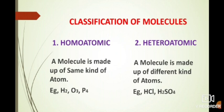In hydrogen chloride, it contains two different kinds of atoms: one is hydrogen and another one is chloride. And in hydrogen sulfide, the third element is sulfur and another is oxygen.